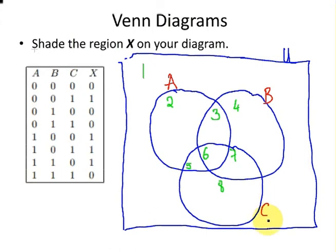I'm going to shade it in in black. Now, what we're going to do is, for each of these rows here, I'm going to pick out where X is 1. X is 1 here, here, here, and here. So X corresponds to 4 of these regions.